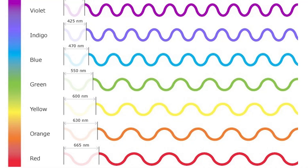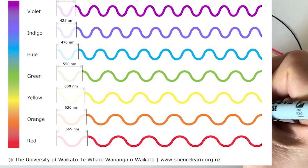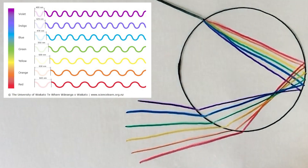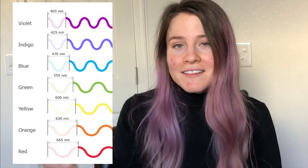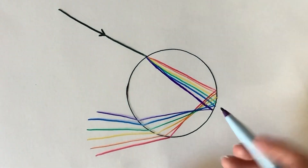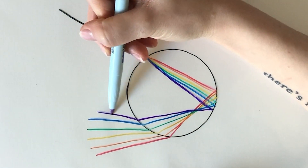Light is made up of a bunch of different wavelengths, and each of those wavelengths refract differently. Violet, being the shortest wavelength, makes a path that looks like this.